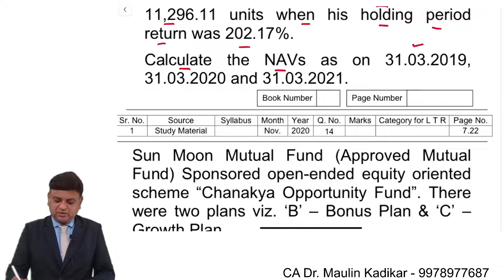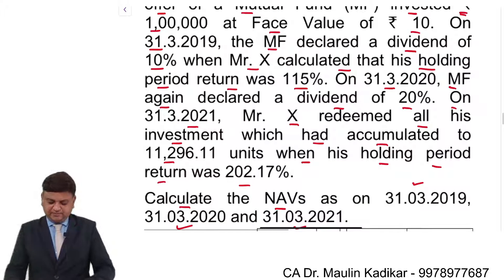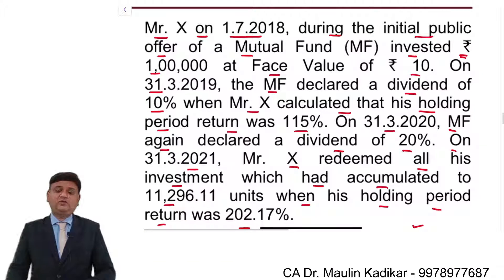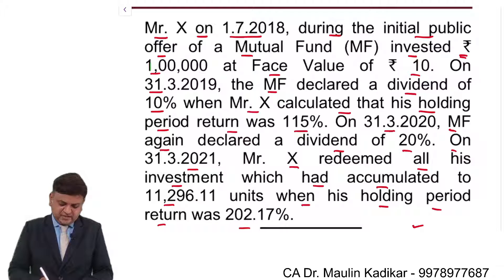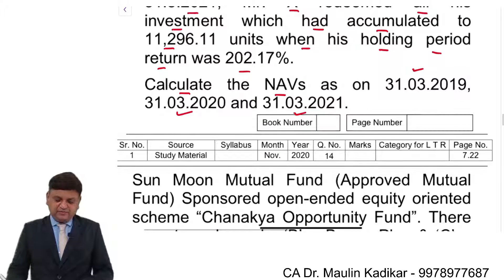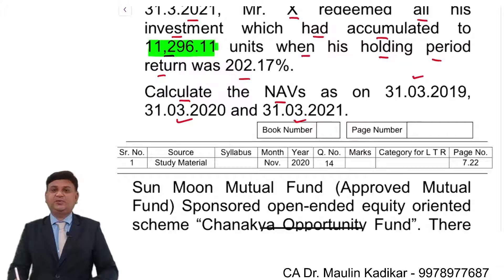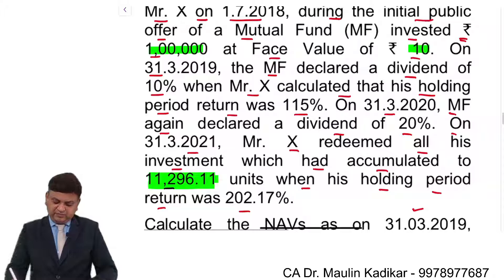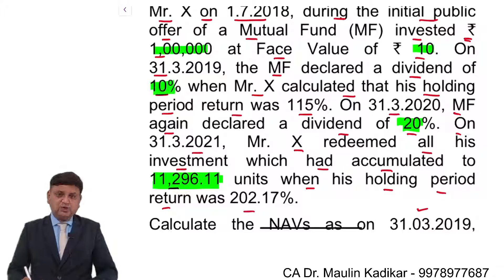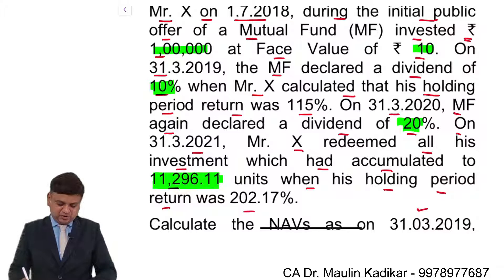Calculate NAV on 31st of March 2019, 31st of March 2020, and 31st of March 2021. These are the three dates on which we are required to find NAV. Initially 10,000 number of units were allotted, and at the time of final redemption, the number of units held by the investor is 11,296.11. It has been provided to us indirectly that the investment is made in a dividend reinvestment plan. Accordingly, we are required to make the calculation.